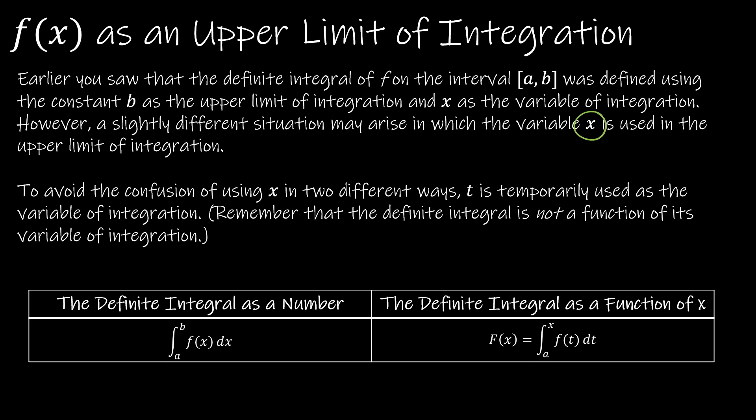So in those cases, in order to avoid confusion, quite often we'll use F of T, DT. So we'll change the actual function with respect to T just so that it doesn't get confused with the X, which is now our upper limit of integration. So this is the way we've been seeing it, the integral from A to B of F of X DX. And this is the definite integral as a function of X. So we have X as one of the limits of integration.